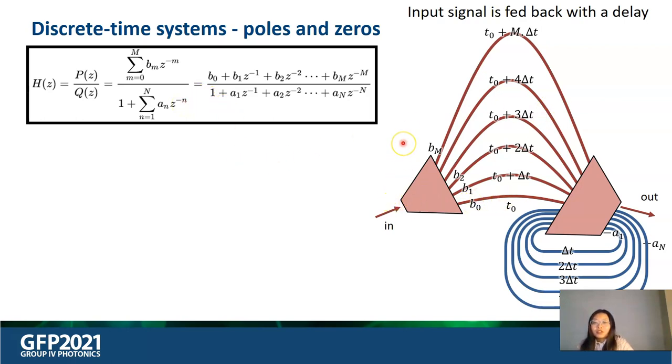The incoming light beam is separated into M plus 1 parts. The splitting ratio is defined by the B coefficients. The split light is transmitted through delay lines. The combination of different delay lines will undergo interference depending on the relative phase shift.